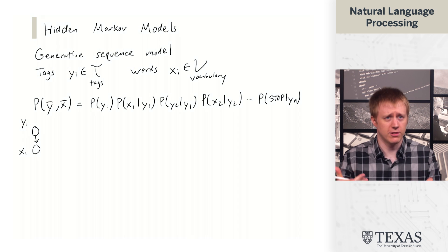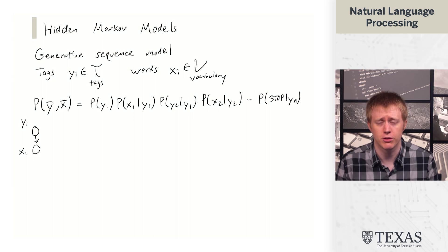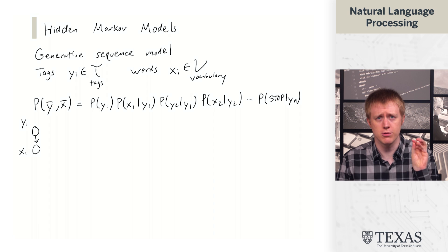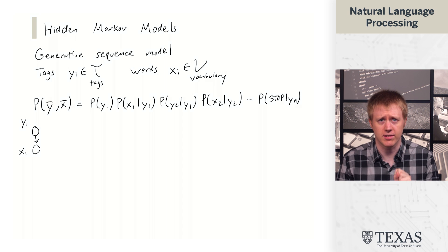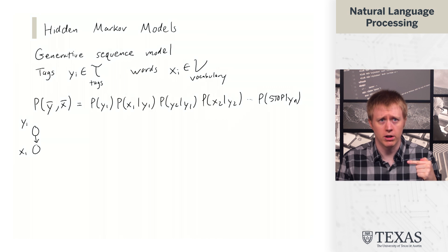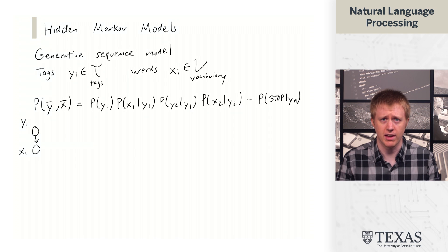one kind of term that's used for this is the generative story of the model. And so the generative story of this model is saying that we have some distribution over tags that can start a sentence, y1. And then conditioned on that tag, we generate a word, which is going to be the first word of the sentence.